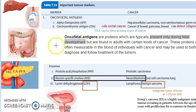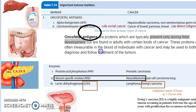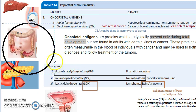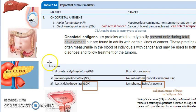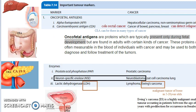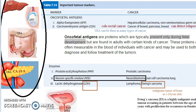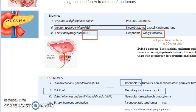Carcinoembryonic antigen (CEA) is seen in colorectal cancer, bladder cancer, and pancreatic cancer. CEA is present in many types of cancer and can also be used to detect cancer relapse, making it useful for prognosis. To recap oncofetal antigens: the two markers are alpha-fetoprotein (AFP) — associated with liver and testis — and CEA — associated with bowel and pancreas.